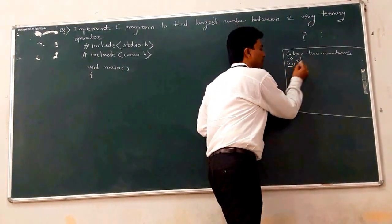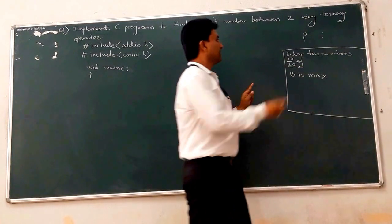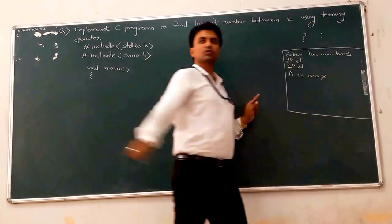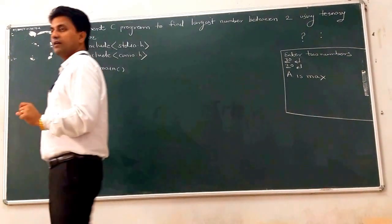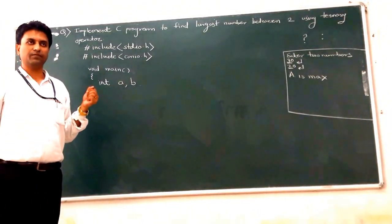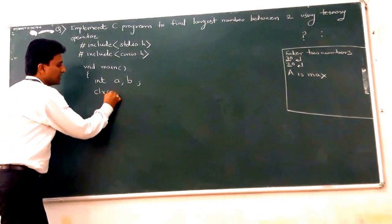We only require two local variables A and B — no need for a third variable when using the ternary operator. After that, we call clrscr for clear screen, then printf to display the message 'enter two numbers.' We can scan two numbers at a time in the same scanf statement — no need to write two separate scanf statements. We scan two integer values, storing them using the address of A and address of B respectively.